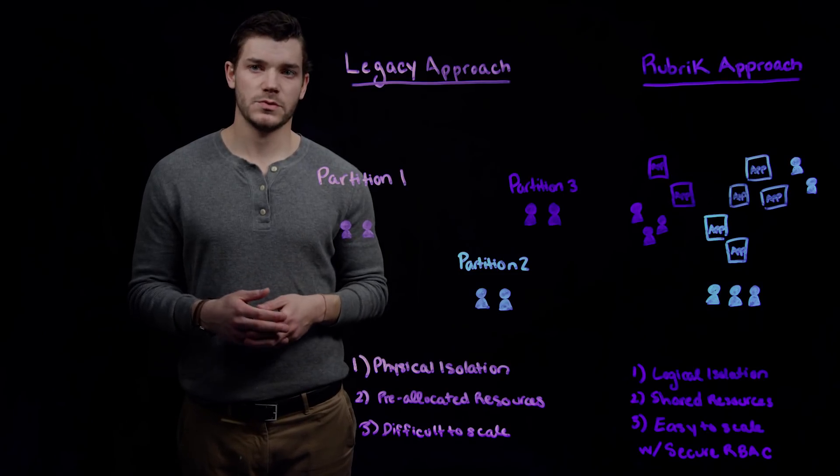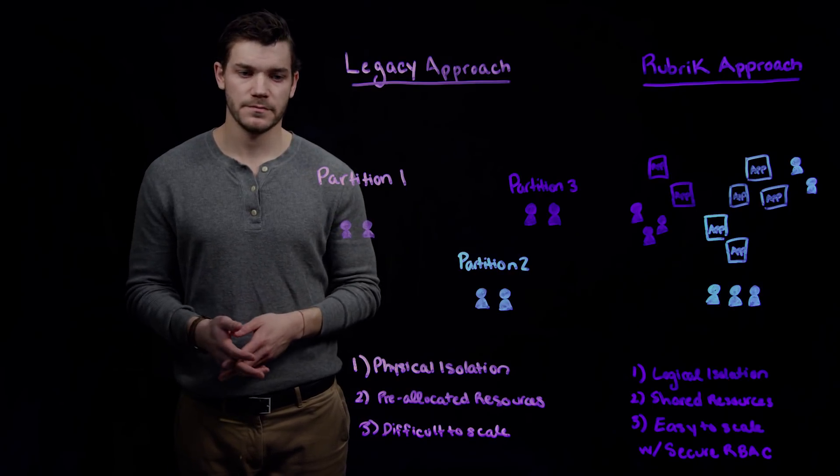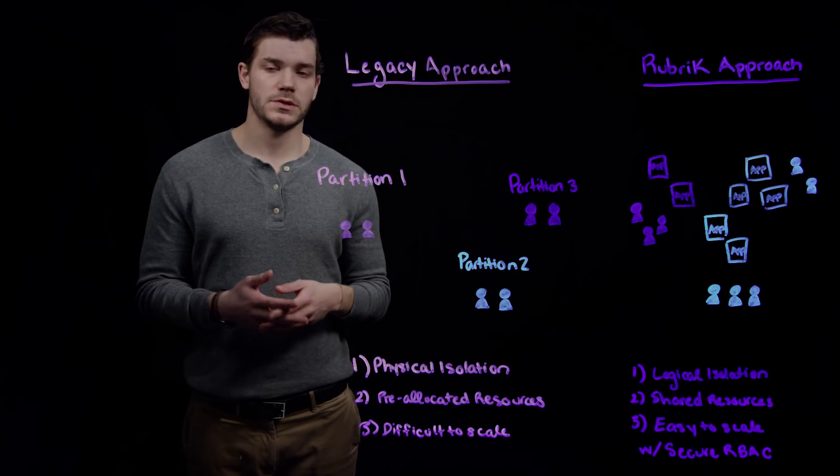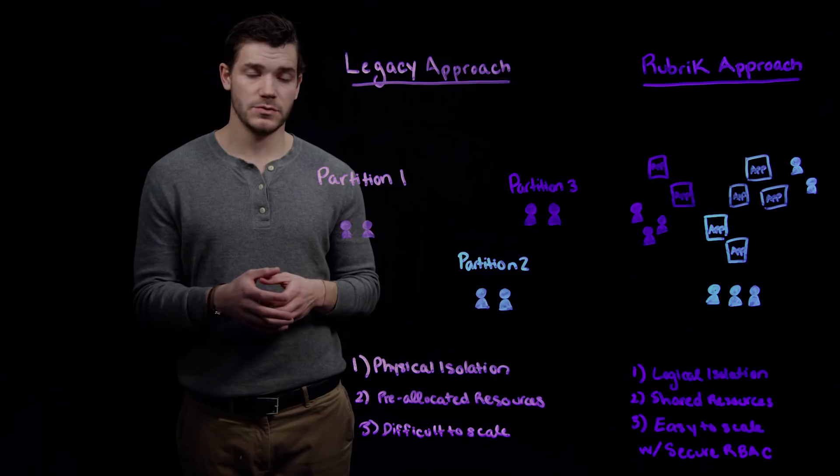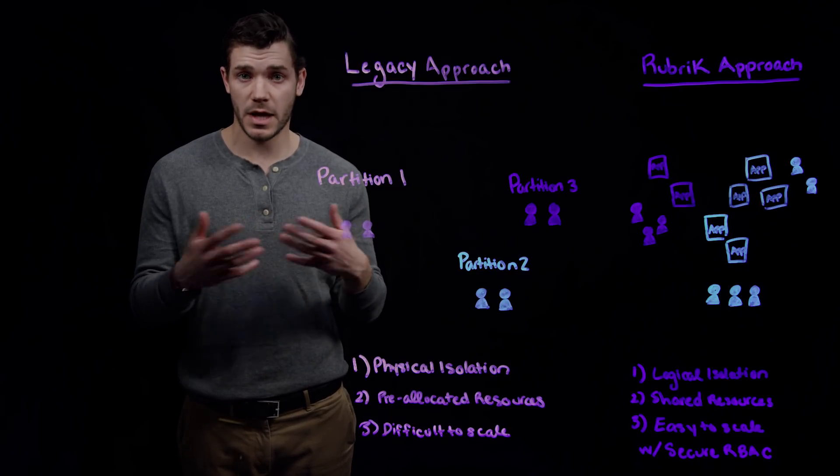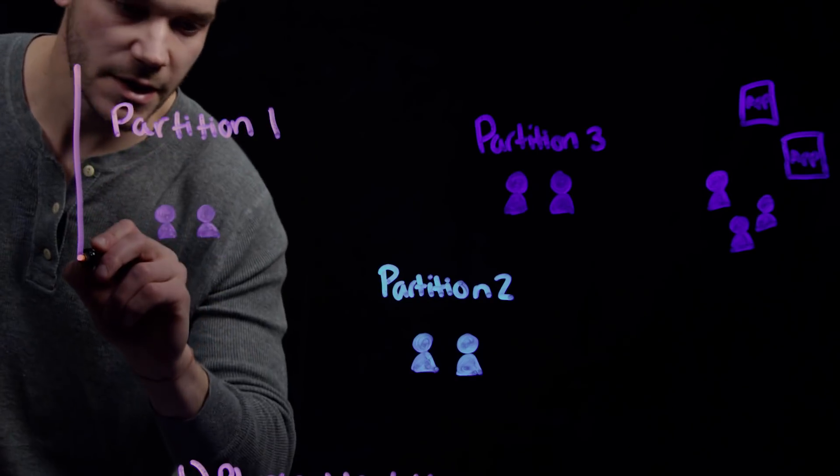So what's the difference between the Rubrik approach to multi-tenancy and the legacy approach? The legacy approach to multi-tenancy employs physical partitions where you basically divvy up the compute and storage environment into different partitions like this.